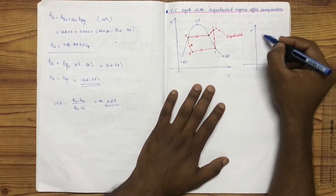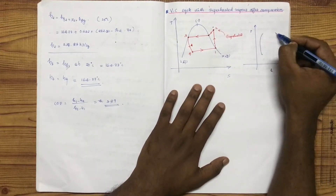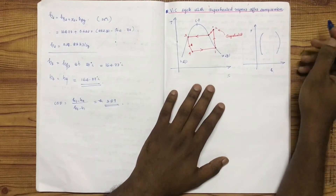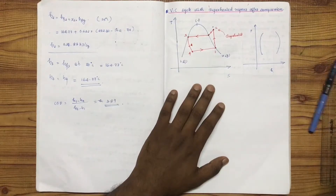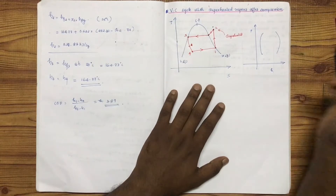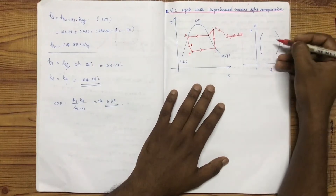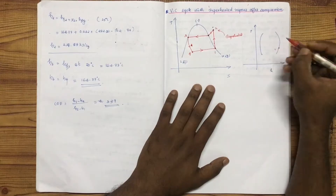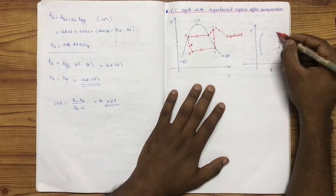If we have a P-H diagram, we can use the P-H diagram. This is the saturated vapor region on the diagram.